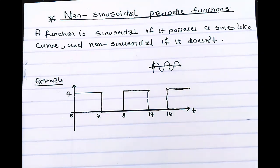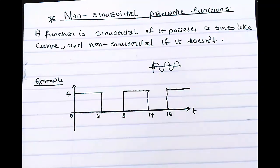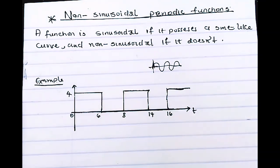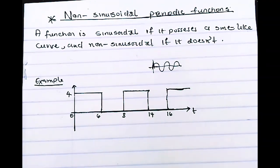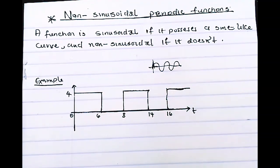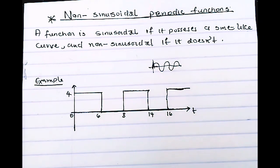We're going to be looking for the period of oscillation when you are given this type of graph or a non-sinusoidal function. If you look at this, it's very easy to find the period of oscillation. The formula I gave on our last video only works for sinusoidal functions.